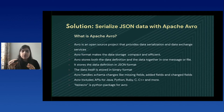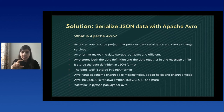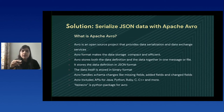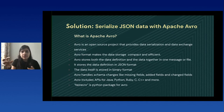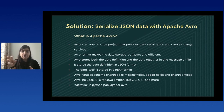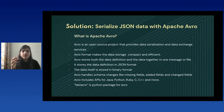Avro by itself stores both the data definition and data together in one message or file. If you convert one JSON file to Avro format, it stores the data in binary format and also stores the data definition in JSON format. So whenever you look at an Avro file, you can clearly see the schema it was written with. Avro by default handles schema changes like missing fields, adding a new field, or changing the name of a field. Avro has APIs for multiple programming languages — for Python, you can use fastAvro, which is the Python package for Avro.